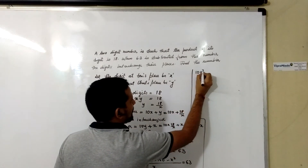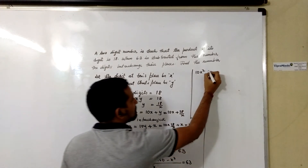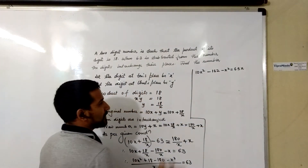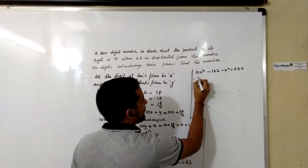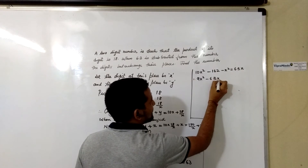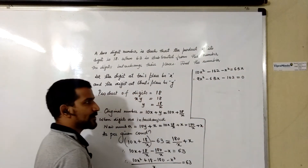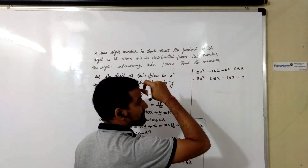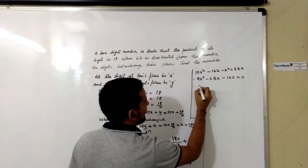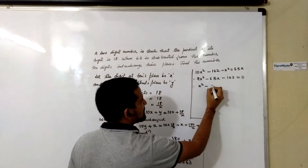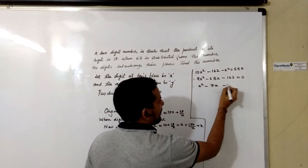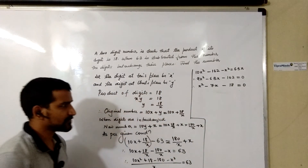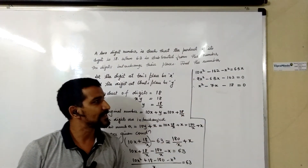This gives us 10X² − X² − 162 − 63X = 0, which simplifies to 9X² − 63X − 162 = 0. Since 9 is common to all terms, dividing the whole equation by 9 gives X² − 7X − 18 = 0.